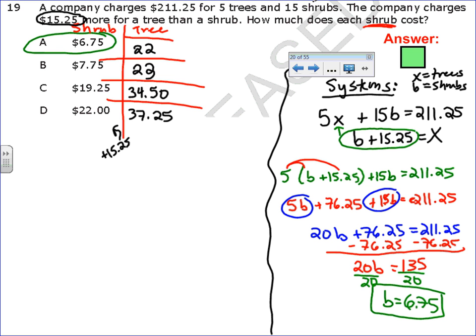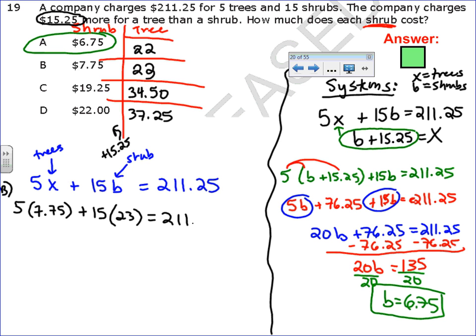So, now I need to know which one of these combinations makes this first statement true. The first statement said that if you have five trees and you have 15 shrubs, it has to equal a total of 211.25. I'm going to put in my answer choices. I already know it's A, so let's use a different one. Let's use B as an example.